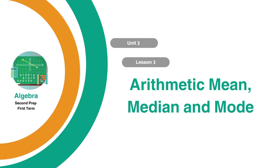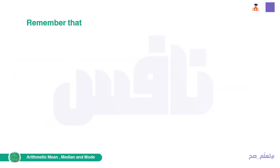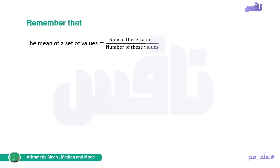Hello dear second prep students. We're going to study lesson 3 in unit 3, and this is the last lesson in statistics. In this lesson we're going to study arithmetic mean, median, and the mode. Remember that the mean of a set of values equals the sum of these values over the number of these values.